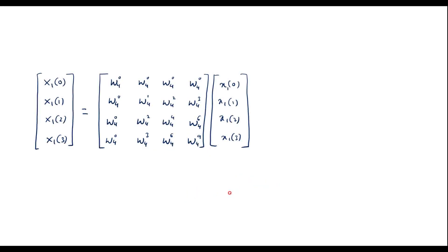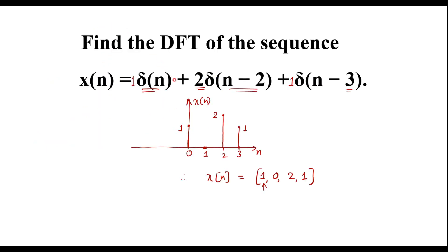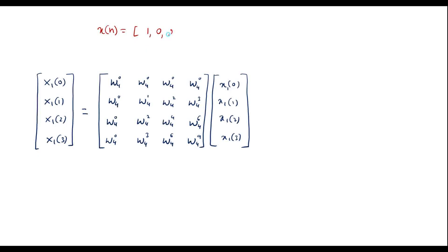I will use the matrix method to find the DFT of this sequence. The given sequence is x(n) = {1, 0, 2, 1}. In the matrix method, the output column matrix is X(0), X(1), X(2), X(3), where capital X represents the DFT of x(n). Here we have 4 samples, so N = 4, and we need to find the 4-point DFT. This gives us the twiddle factor matrix.